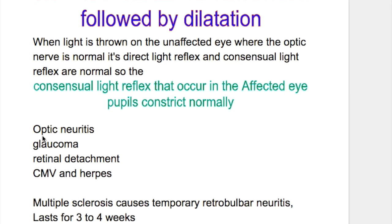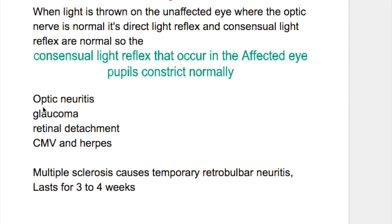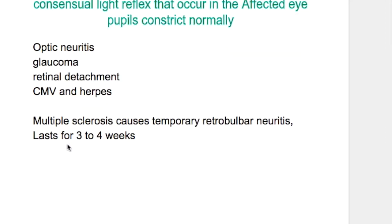The causes of Marcus Gunn pupil include: optic neuritis, retrobulbar neuritis, glaucoma, retinal detachment, and infections like CMV and herpes. Multiple sclerosis also causes temporary retrobulbar neuritis that lasts for 3 to 4 weeks, which also gives a Marcus Gunn sign.